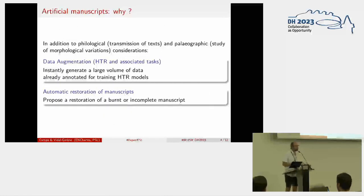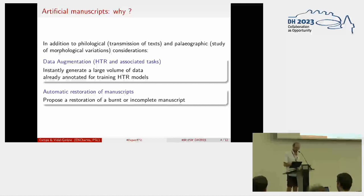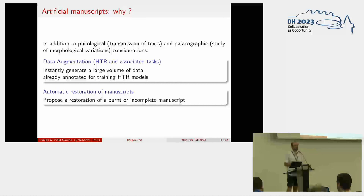The first question is why — besides the fact that it is fun — why and for what reason could we want to generate artificial manuscripts? There is a very practical reason, which is data augmentation for tasks such as handwritten text recognition. And the other, a long-term perspective for us, is the automatic restoration of damaged manuscripts — so if you are missing part of a page, making a realistic hypothesis for that.